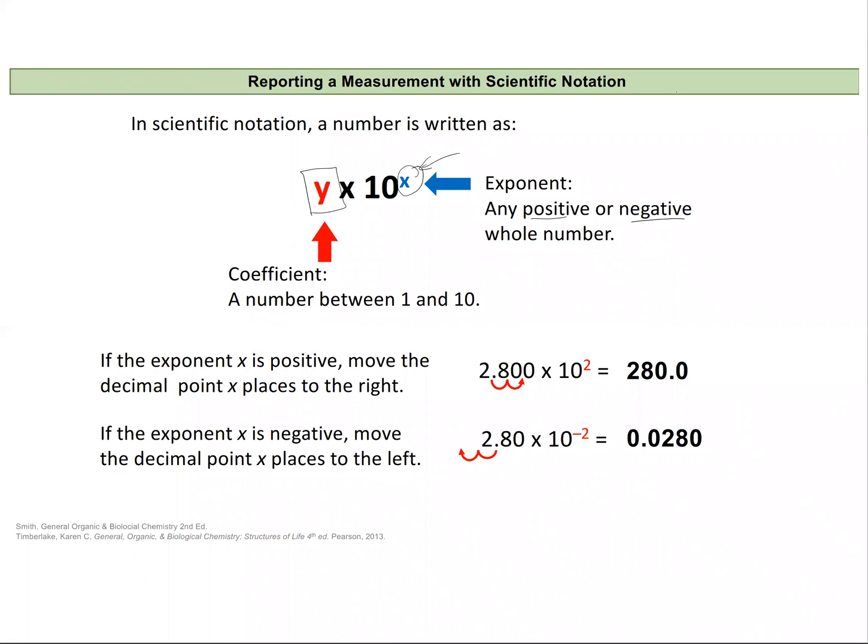So looking specifically at our positive exponent, if we have for our coefficient an integer of 2.8 and we have a positive x value of positive 2, then to convert this it's like saying 2.800 times 10 squared, which would be like times 100.